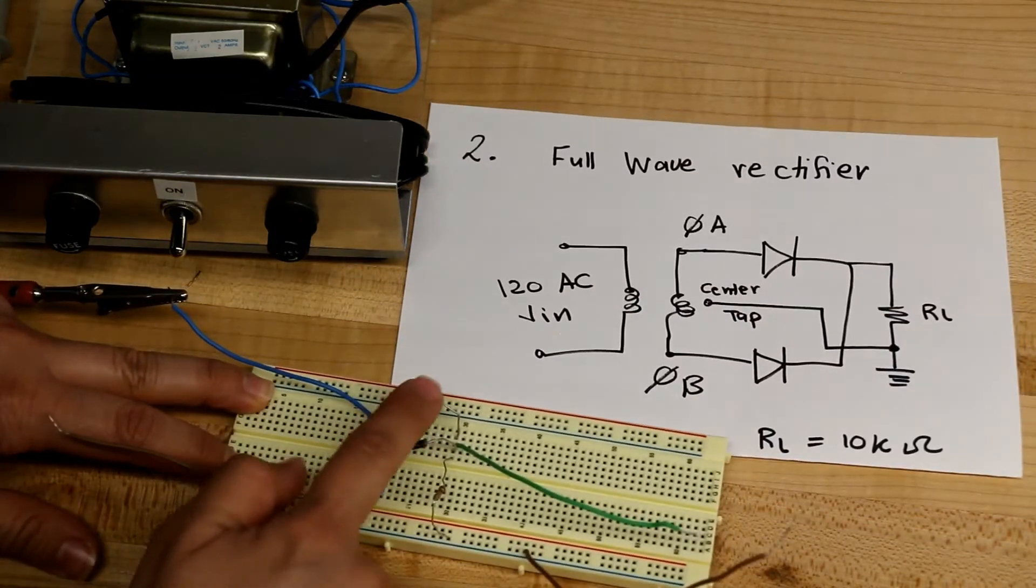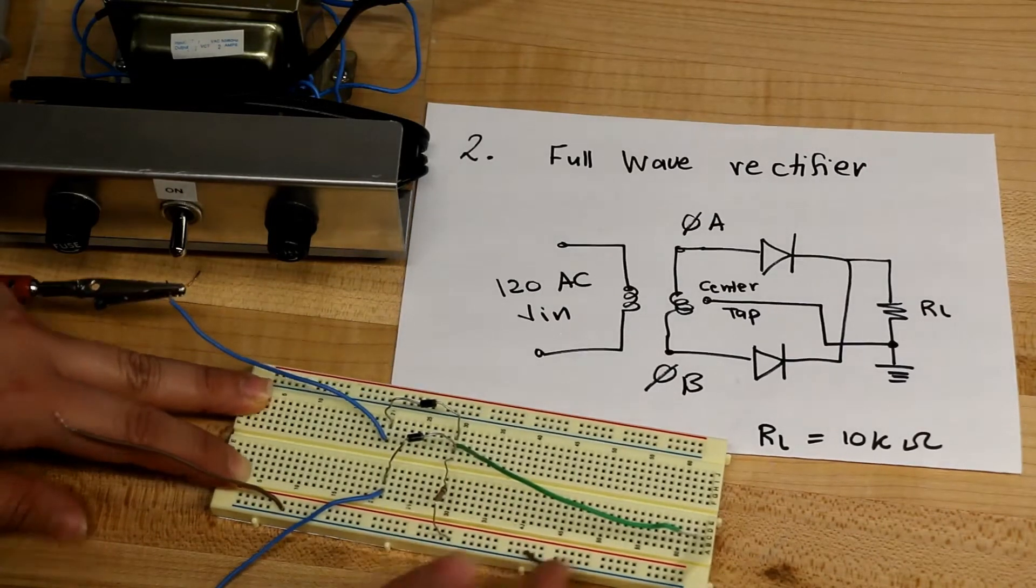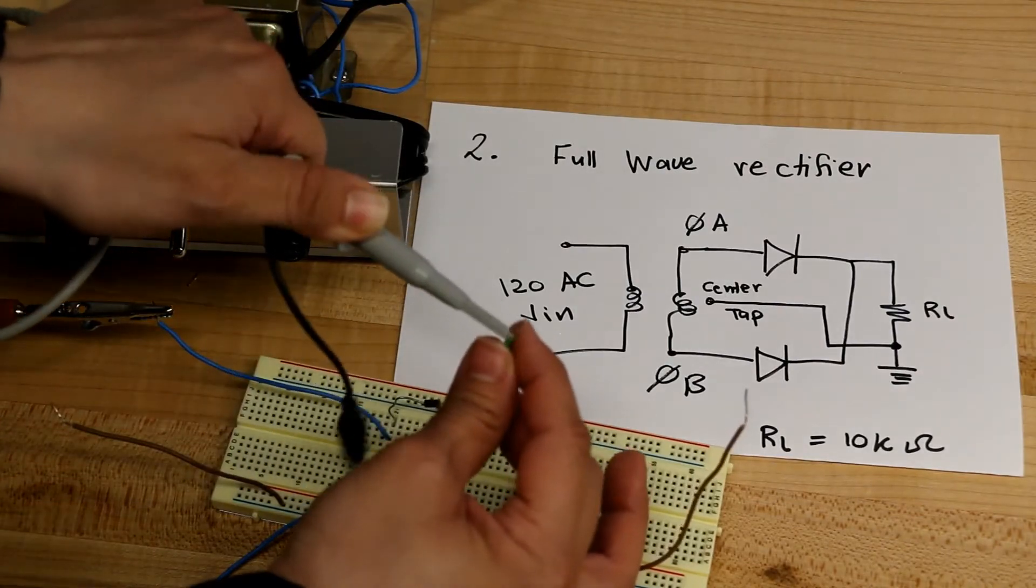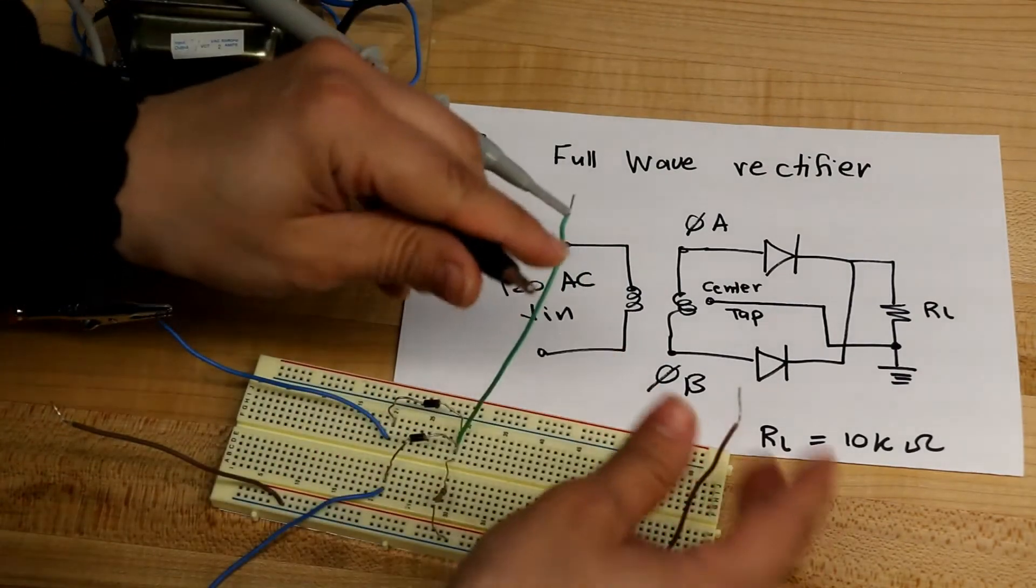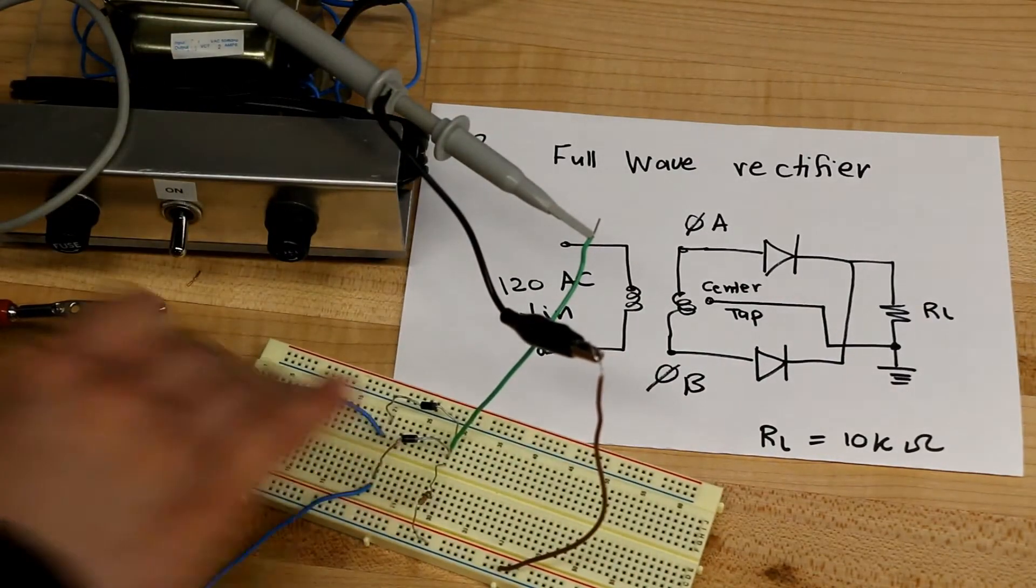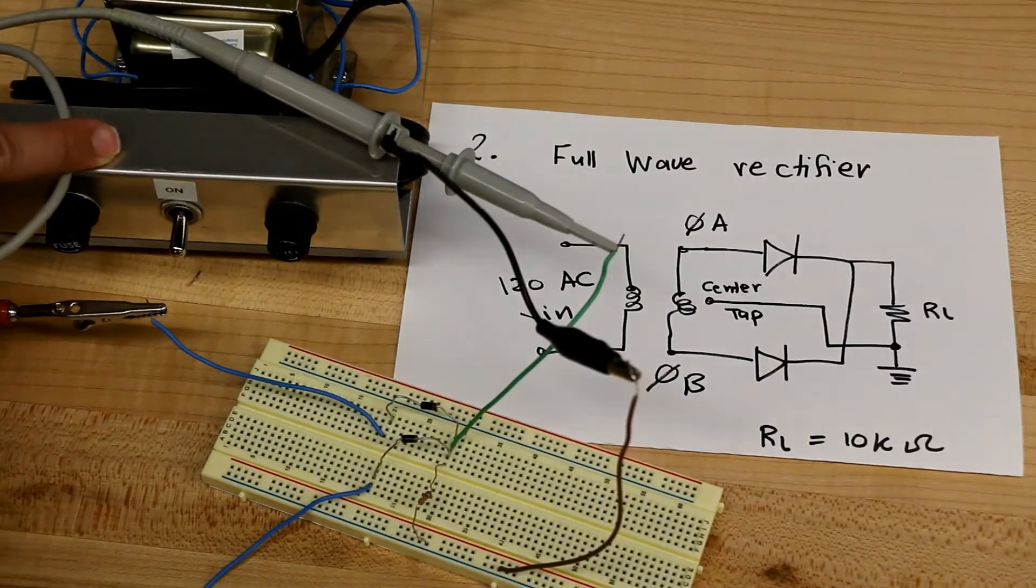The two cathodes are connected together and then connected to the resistor to the ground. Output is measured across the load resistor. Now the circuit is ready, let's turn on the transformer.